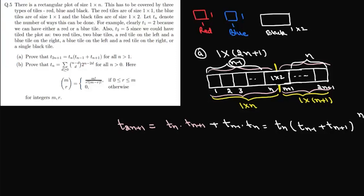So in this first part there were two cases: the first case where we took the two parts separately — n on the left and n+1 on the right — and the second case where the 1×2 black tile bridges the split, giving n-1 tiles on the left and n on the right. These two cases together give t(2n+1) = t(n)·t(n-1) + t(n+1) for all n greater than 1.